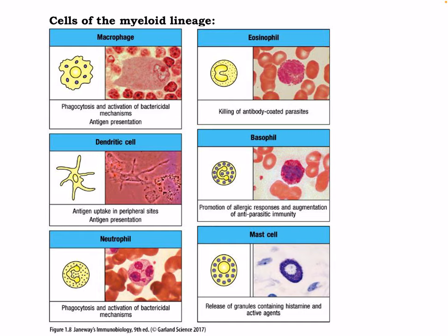Here's a brief overview of key cell types. The macrophage is involved in phagocytosis, activation of bactericidal mechanisms, and antigen presentation — a key piece of information, as these cells are critical in the transition between innate and adaptive immunity. Eosinophils are involved in killing antibody-coated parasites. Basophils promote allergic responses and augment antiparasitic immunity. The dendritic cell is the most important antigen-presenting cell, involved in antigen uptake at peripheral sites. Neutrophils are our most abundant white blood cell, involved in phagocytosis and bactericidal mechanisms. Mast cells release granules containing histamine and other active agents.